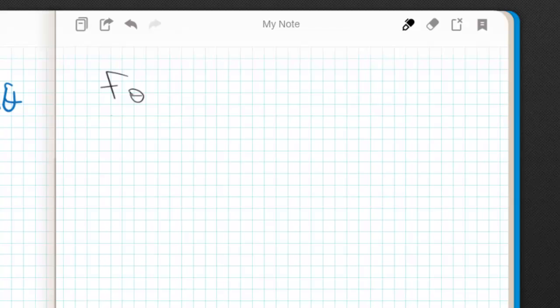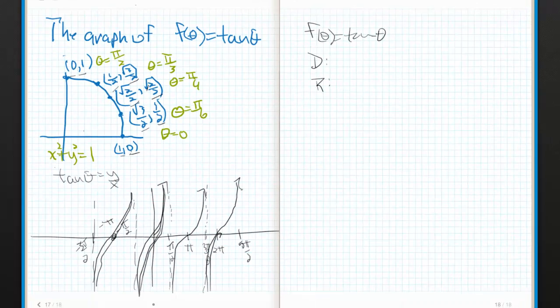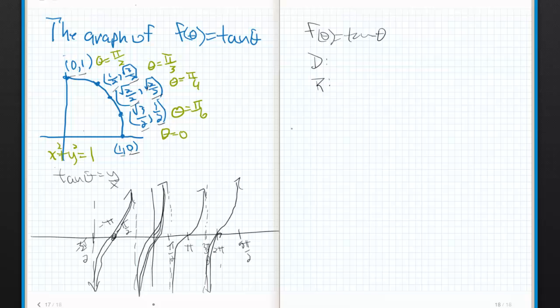So for f of theta equals tangent of theta, let's talk about the domain, and let's talk about the range because this is interesting. Let's talk about the range first. Since range is the set of y values that the function spits out, it should be relatively obvious that my function goes from negative infinity to infinity around these asymptotes, which cleans up my range rather nicely for me. I like that. But let's talk about the domain because this is going to be fancy.